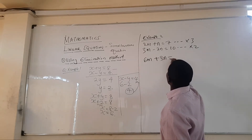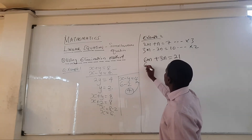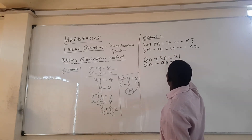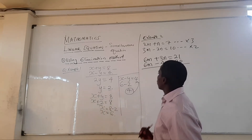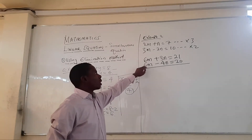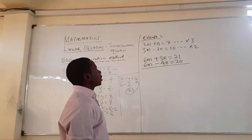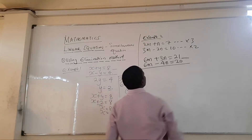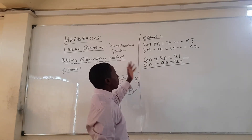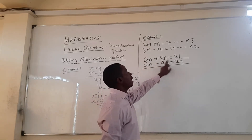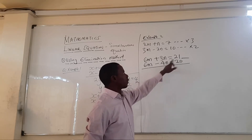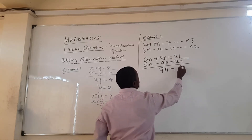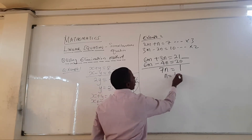Multiplying: 3 times equation 1 gives 6m plus 3n equals 21. 2 times equation 2 gives 6m minus 4n equals 20. Since both signs on m are the same (plus), we subtract the two equations. 6m minus 6m is zero — m is eliminated. Then 3n minus minus 4n: minus times minus is plus, so we get 7n equals 21 minus 20, which equals 1. So n equals 1 over 7.